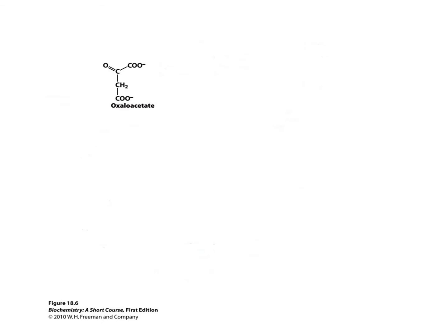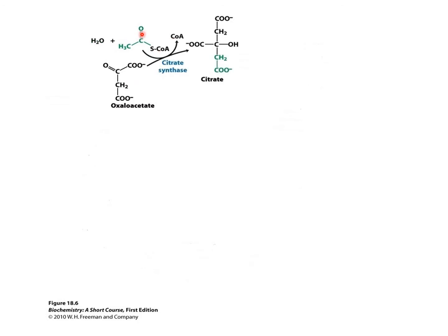Now let's look at the details of the citric acid cycle. To kickstart the cycle, oxaloacetate, which is a 4-carbon compound, will interact with the 2-carbon acetyl coenzyme A to produce the 6-carbon citrate. This process is known as condensation as it involves the joining together of 2 different molecules. A water molecule is used to hydrolyze the thiol ester bond within the coenzyme A, and the energy released from this process drives the synthesis of the citrate molecule. Citrate itself is a stable and less reactive molecule.